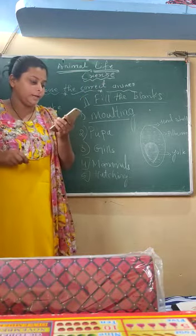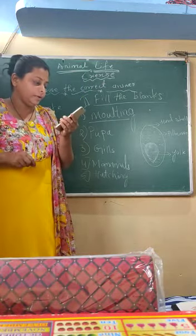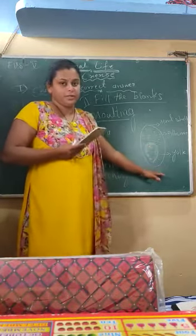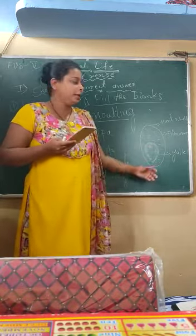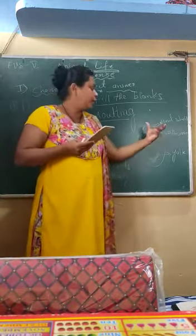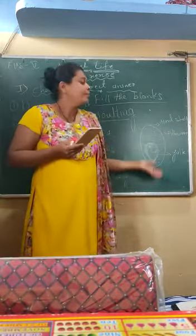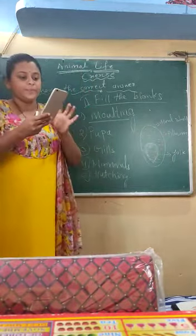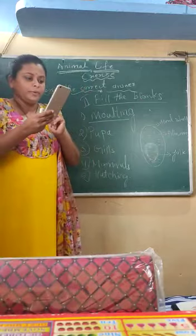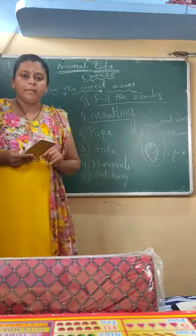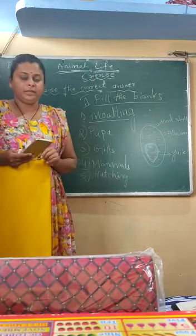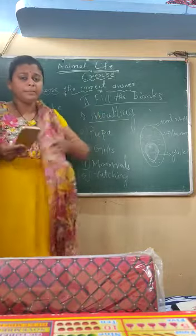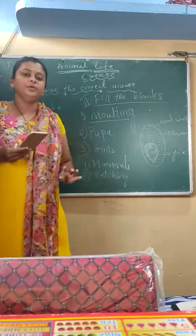The hard shell protects the baby until it comes out naturally. These are the parts and structure of the egg. You can draw this and then write about the yolk and the albumen — whatever I have discussed — make sentences and write that.